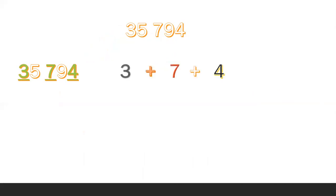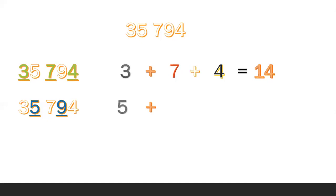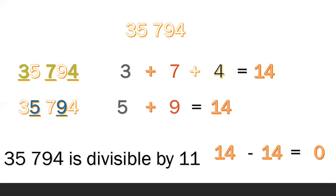Another example: 35,794. The digits in the odd places are 3, 7, and 4. Get the sum: 3 plus 7 plus 4 equals 14. Then the digits in the even places are 5 and 9. Get the sum: 5 plus 9 equals 14. Then get the difference: 14 minus 14 equals 0. Therefore, 35,794 is divisible by 11.